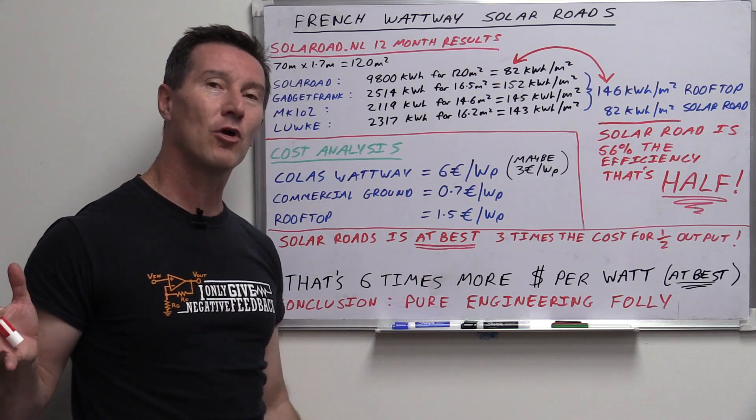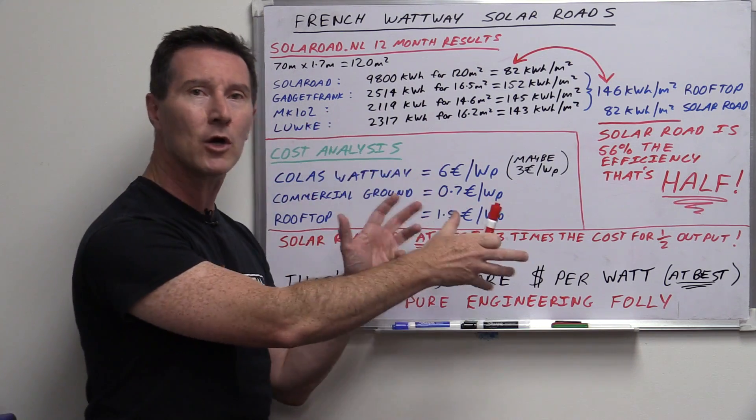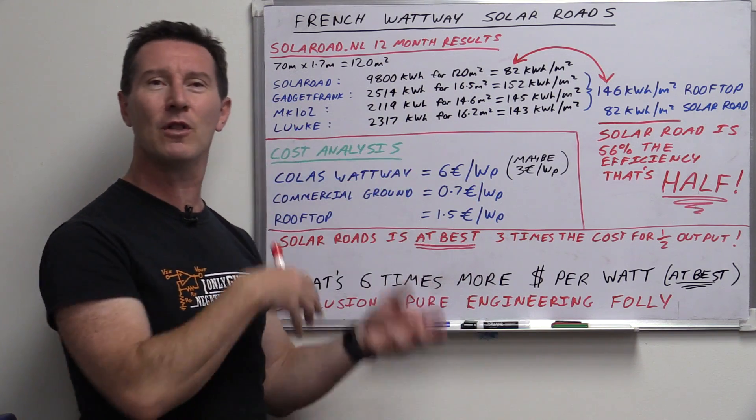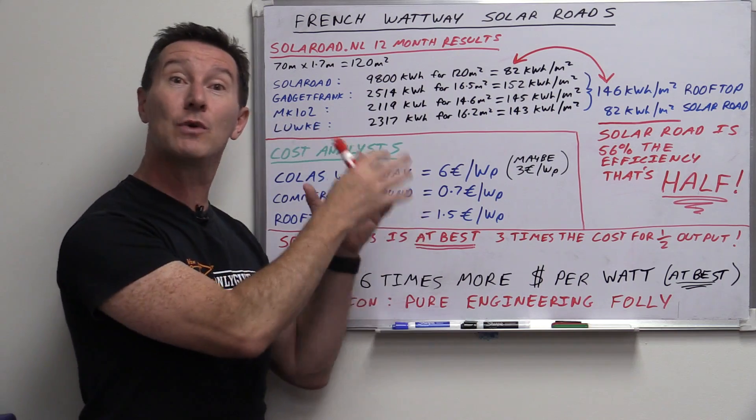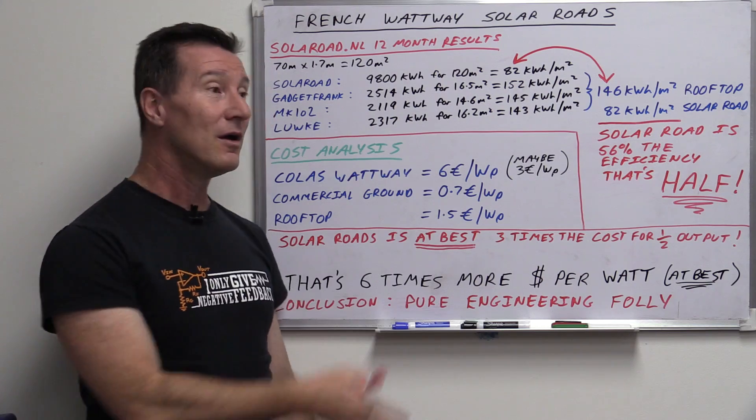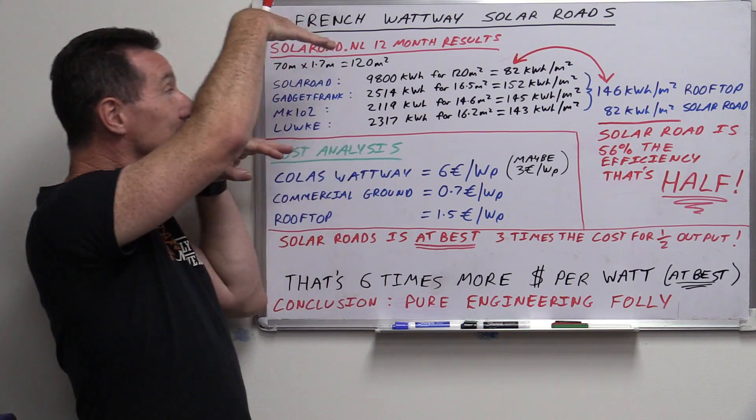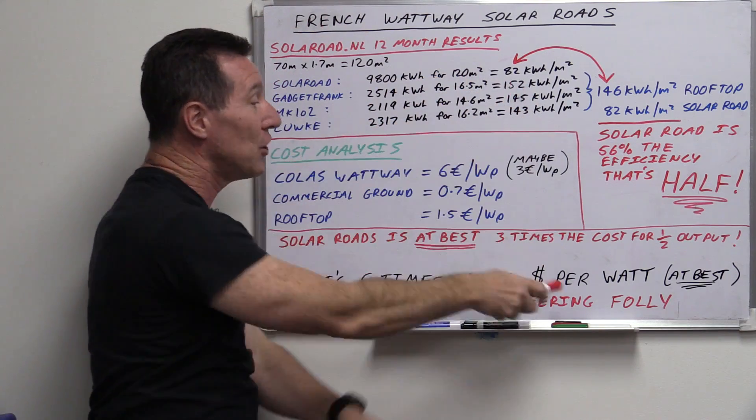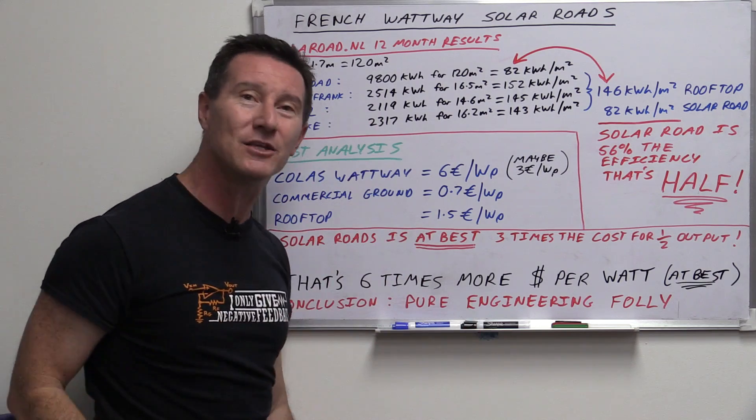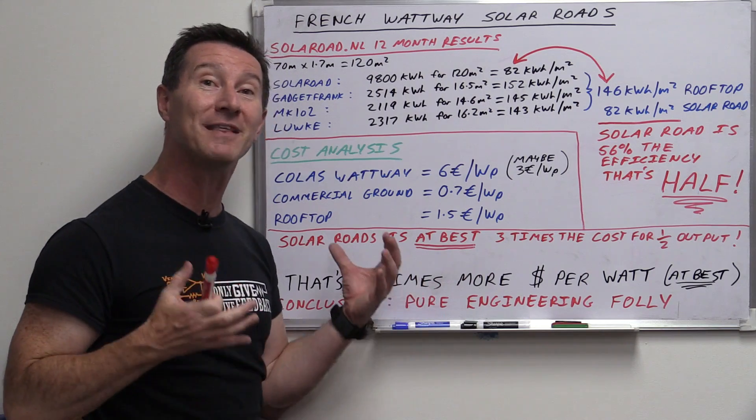And for the few solar roadways fanboys still out there, their argument still remains the same. Oh, it's going to get lower cost with higher volume and the infrastructure, learn to install them and maintain them, and costs will go down and down and down. Yeah, well, they're still going down and down and down for regular rooftop and commercial installations as well. It's like they're still going down. There's still this huge gap of six times or more. It's probably even order of magnitude more cost dollars per watt. It's always going to be the case.